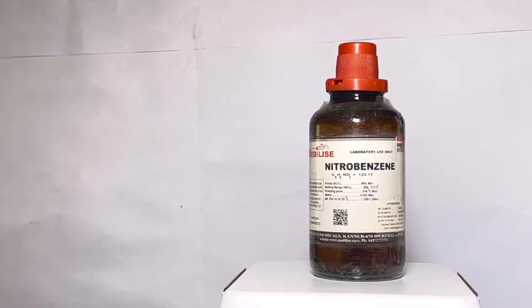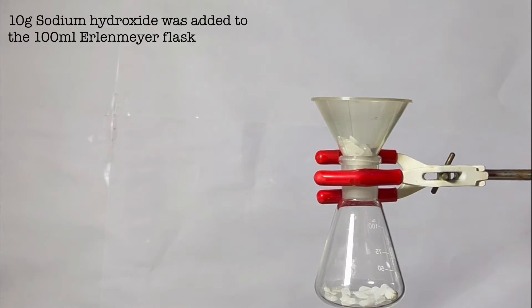Start by fixing a 100 milliliter Erlenmeyer flask on a stand with a clamp. A magnetic stirring bar was placed inside. Using a funnel, 10 grams of sodium hydroxide pellets were transferred to the flask.